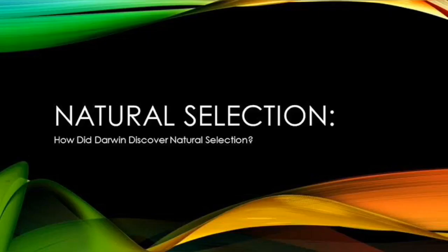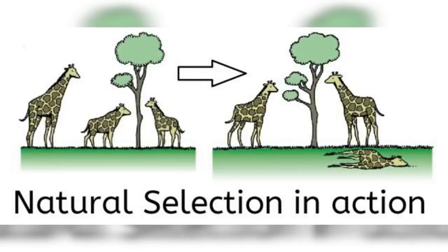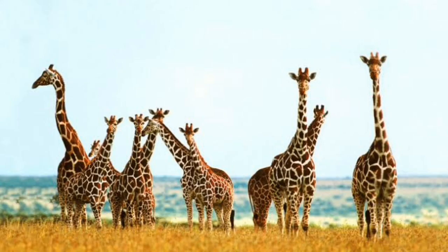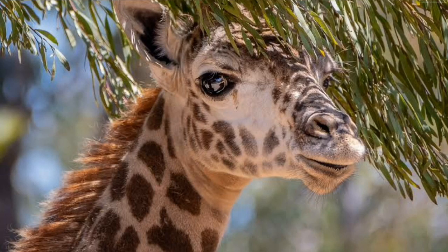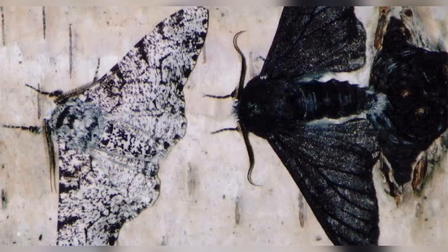Natural selection is linked to the common ancestor. The natural selection is illustrated with a white and black color example. The best example is the peppered moths, which come in white and black colors.